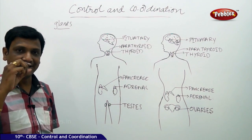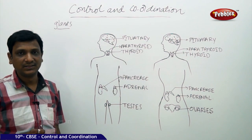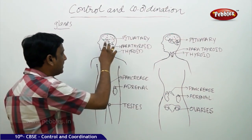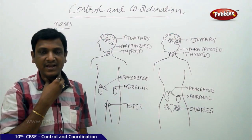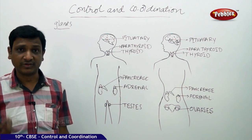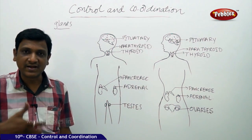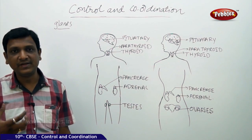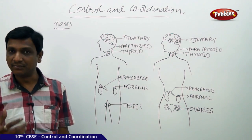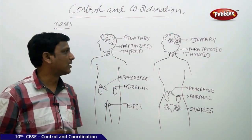The pituitary gland controls all the other glands of our body. That is why the pituitary is called the master gland — it itself produces some hormones and at the same time controls other glands. In the neck region, we have an important gland called the thyroid. Thyroid controls the metabolism of our body. Different people have higher or lower metabolic rates. The metabolic rate is controlled by the thyroid gland, which secretes a hormone called thyroxin.